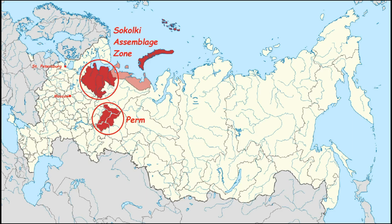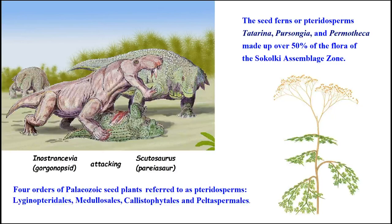Up north in Siberia, you have the Perm region and the Sokolki assemblage zone, which is heavily studied today. The animals found there include Inostrancevia — a type of predator like a tiger or lion — and Scutosaurus, which was a pareiasaur. The plants, as you can see on the right, were seed ferns — there were four orders of these seed plants, referred to as pteridosperms. These seed ferns were maybe 90% of the flora at the time. In some places there were only these plants. When they disappeared, what was the animal going to eat? Switch overnight to conifers or cycads? Never happened.